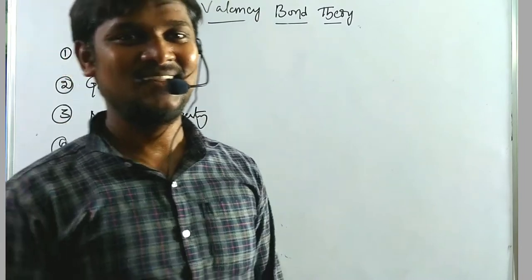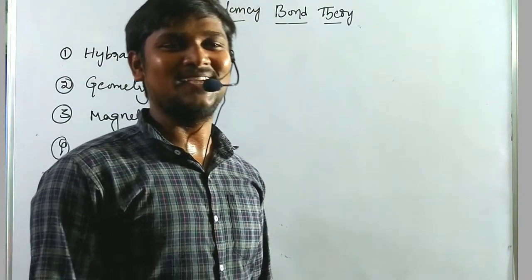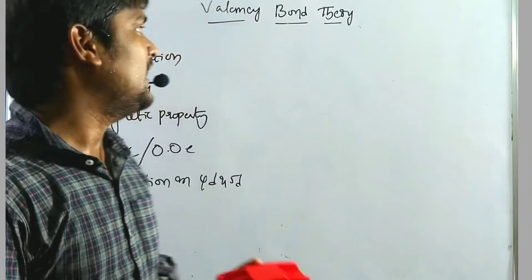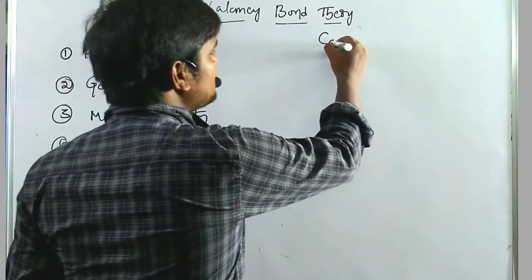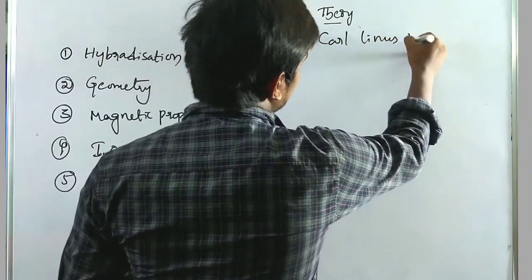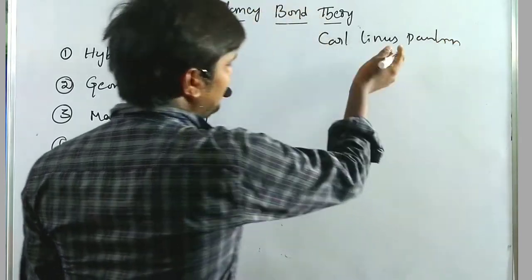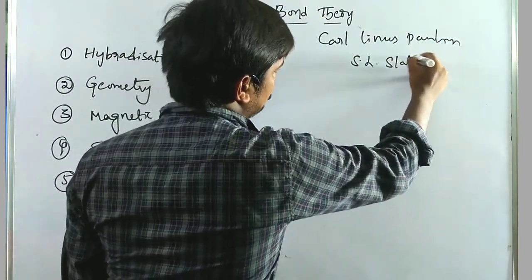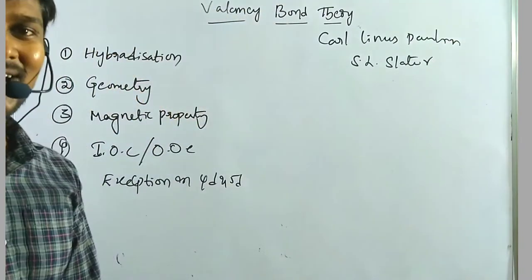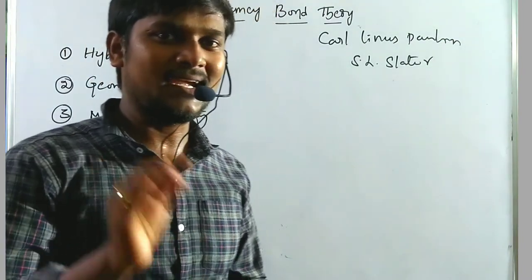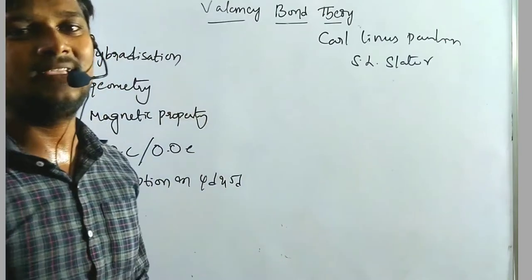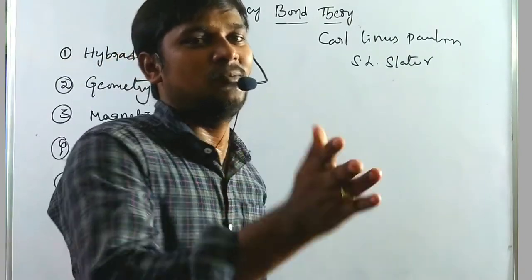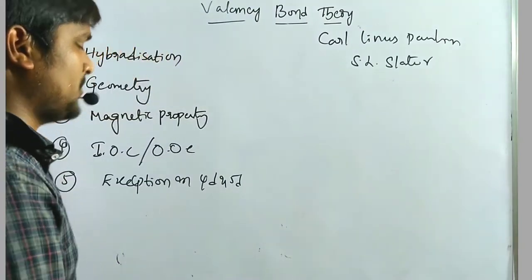Welcome to RPP Resonance Chemistry. Today our topic is Valence Bond Theory. Valence Bond Theory was mainly explained by Carl Linus Pauling and S.L. Slater. Carl Linus Pauling received two Nobel Prizes — one in Chemistry and another in Peace. He is the scientist who received two unshared Nobel Prizes.